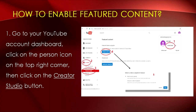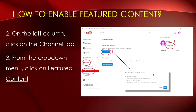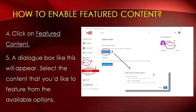Now let me show you how to enable featured content in your YouTube channel. First, go to your YouTube account dashboard, click on the person icon on the top right corner, then click on the Creator Studio button. Second, on the left column click on the Channel tab, from the drop-down menu click on Featured Content, then select Featured Content. A dialog box like this will appear — select the content that you'd like to feature from the available options.